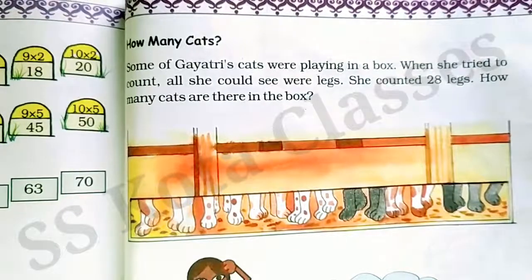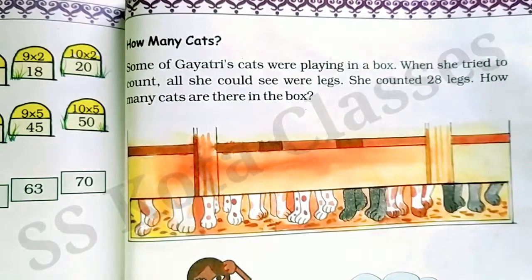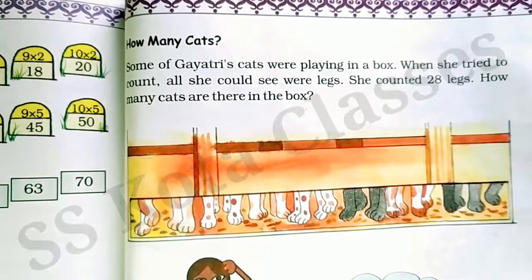तो बच्चों आप जानते हैं कि एक cat के होते हैं 4 legs. तो 28 legs हैं, means वहां पर कितनी cats होनी चाहिए? हम क्या करेंगे? 28 divided by 4, और हमें answer मिल जाएगा which is 7. Means वहां पर 7 cats हैं.